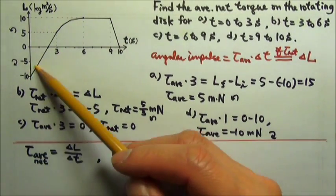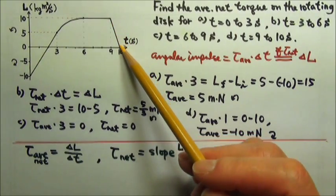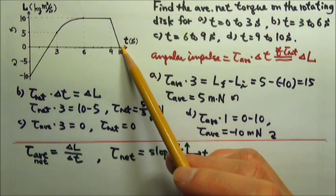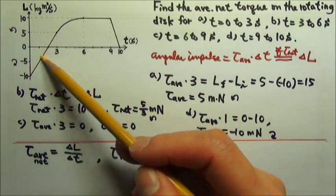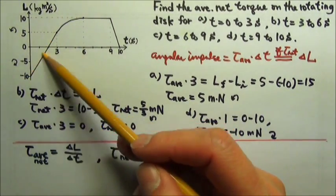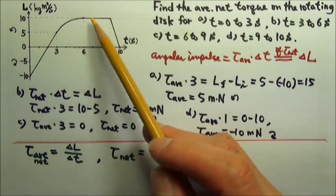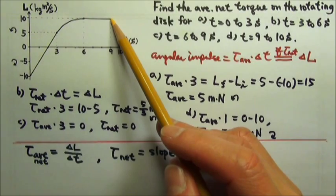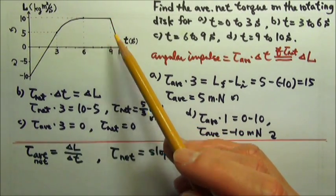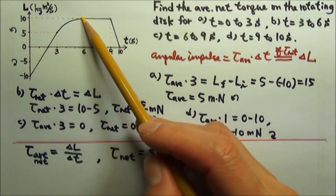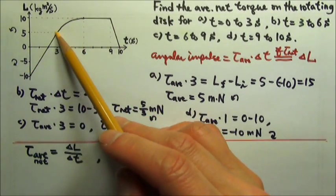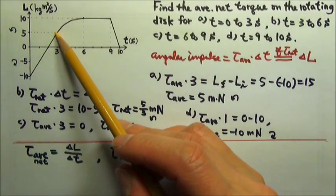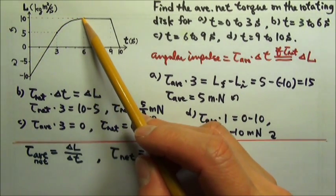So for each of these three time intervals, the graph is straight in each of these sections. So we have constant slope the entire time, constant net torque. This part, constant net torque is zero. For this part, the constant net torque is negative. This is the only segment in this graph that has a changing slope. So between three and six seconds, the net torque is not a constant.